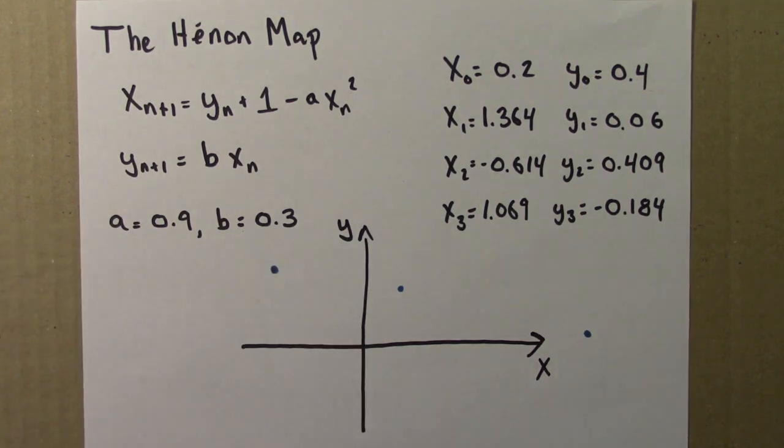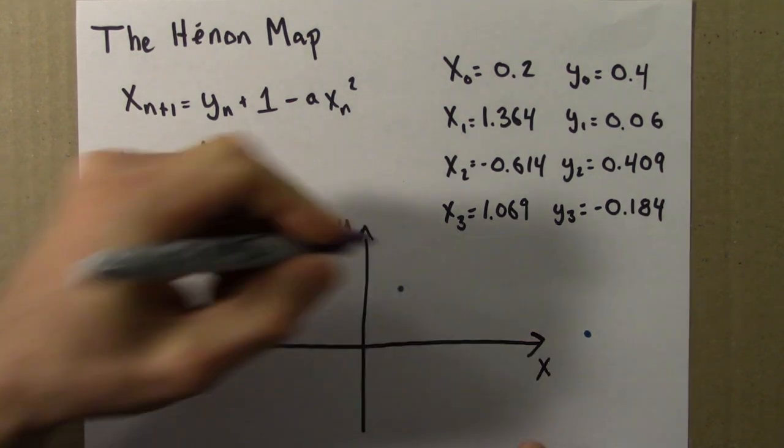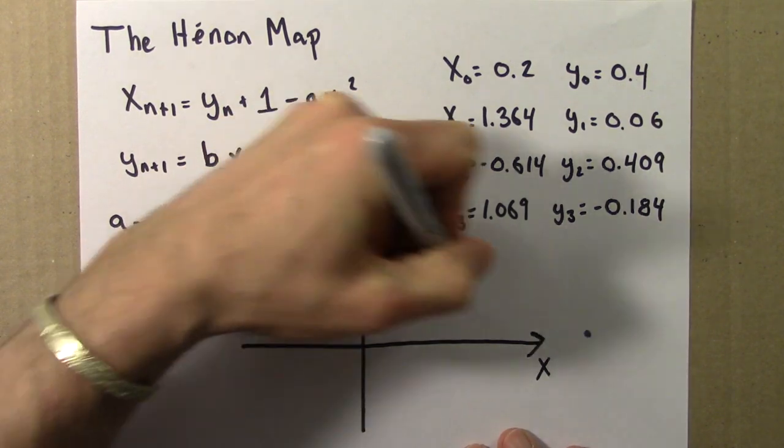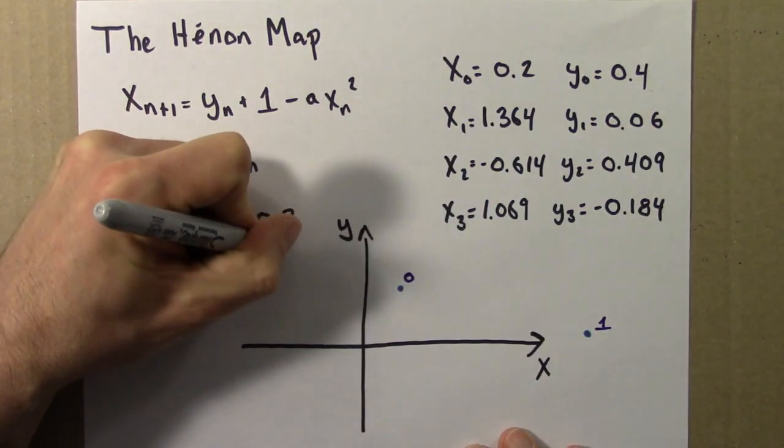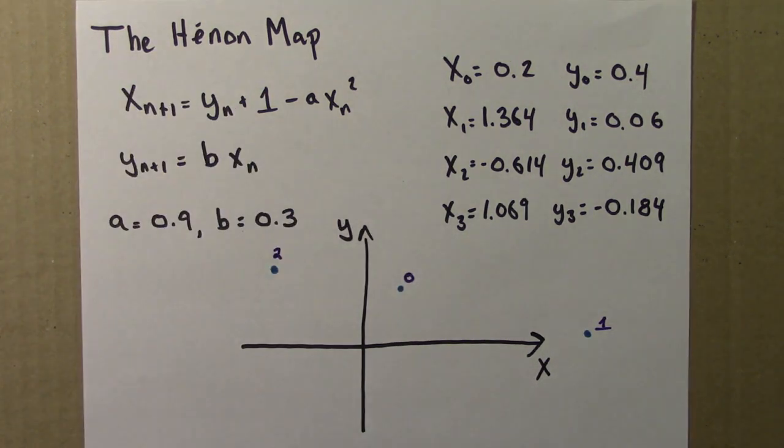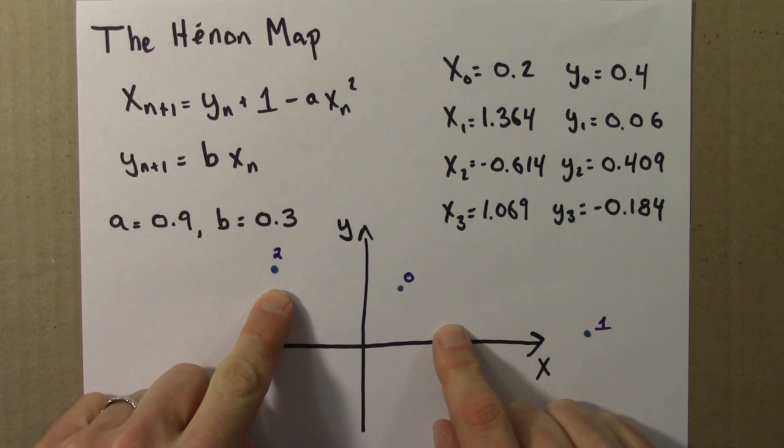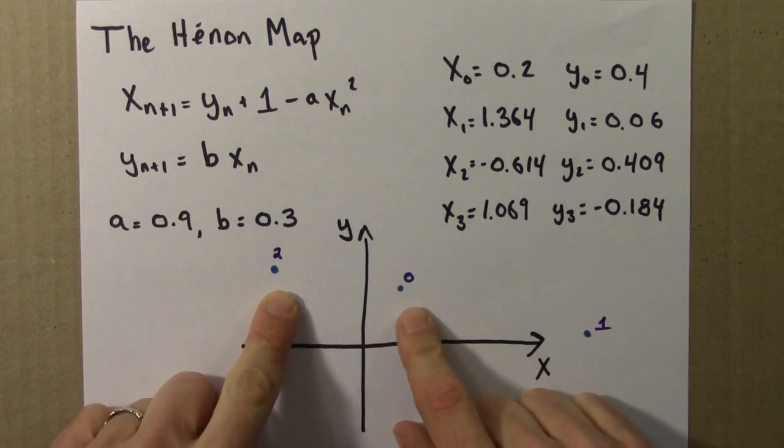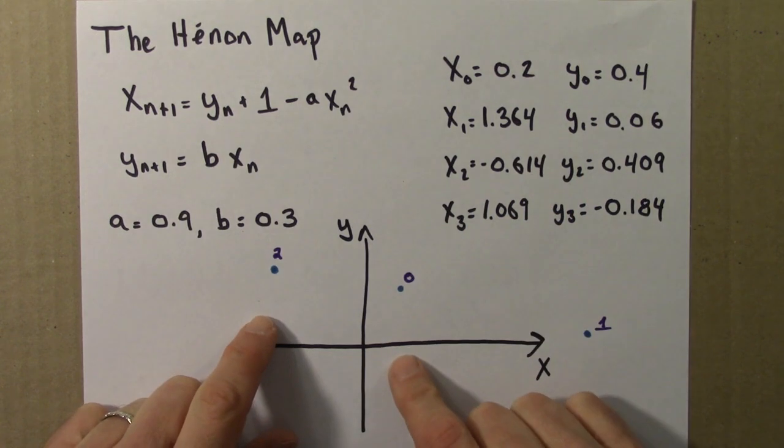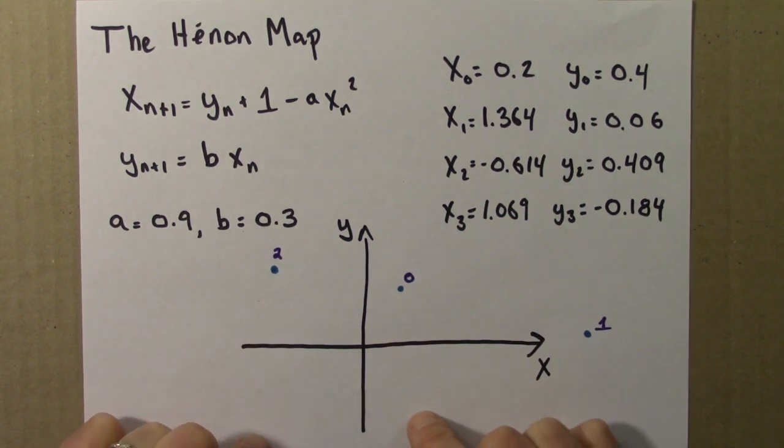And let's see, this is 0.0, that was 0.1, this was 0.2, and so on. So I could keep plotting these dots, many, many of them, and see what happens. See if we get pulled into a fixed point, or maybe some sort of a cycle or something.